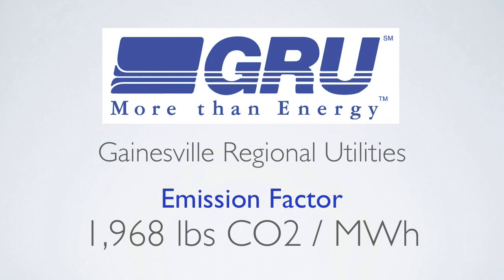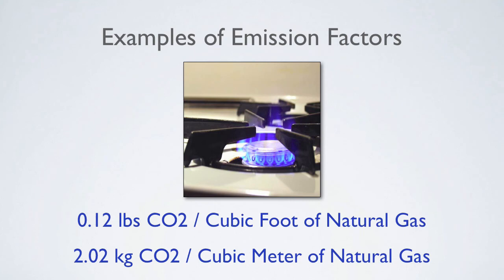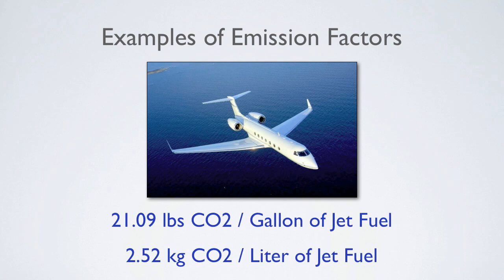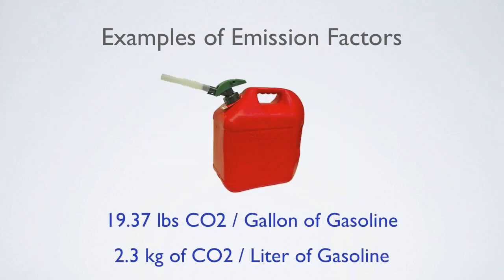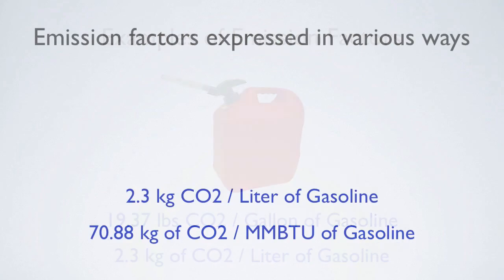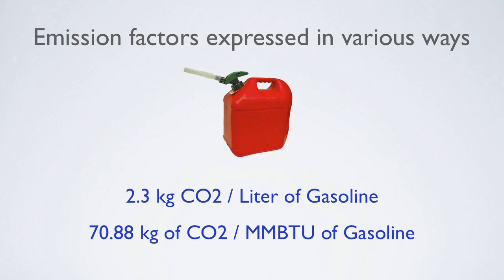Let's look at some other examples of emission factors, which don't change over time and can typically be applied worldwide. The emission factor for natural gas is 0.12 pounds of CO2 per cubic foot, or 2.02 kilograms CO2 per cubic meter. The emission factor for jet fuel is 21.09 pounds of CO2 per gallon, or 2.52 kilograms CO2 per liter. The emission factor for gasoline is 19.37 pounds of CO2 per gallon, or 2.3 kilograms CO2 per liter. It is important to note that emission factors are often expressed in metric units or in terms of energy content — for example, gasoline can also be expressed as 70.88 kilograms of CO2 per million BTUs.